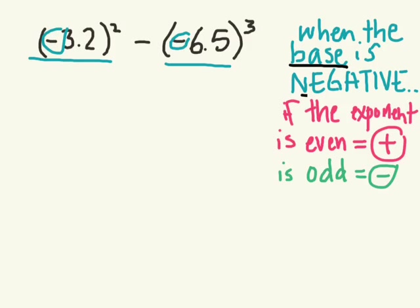So whenever we're looking at powers with a negative base, if the exponent is an even number, for example 2, 4, 6, 8, the result when you simplify the power is going to be a positive result.